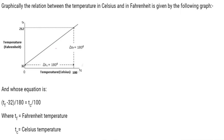Graphically, from 0 to 100 on the Celsius scale, at 0°C you have 32°F and at 100°C you have 212°F. There is a conversion equation: (Tf − 32) / 180 = Tc / 100, where Tf is the temperature in Fahrenheit and Tc is the temperature in Celsius.